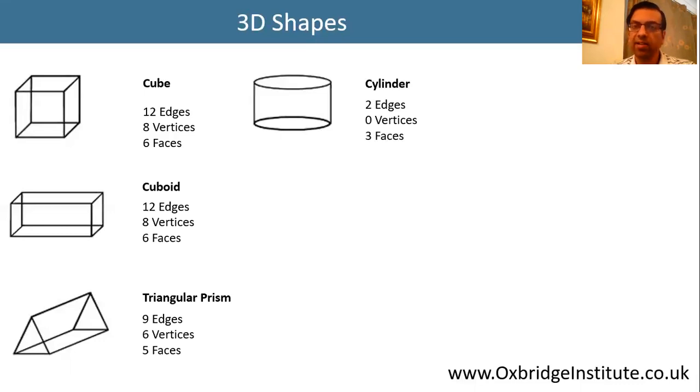A cylinder has 2 edges, no vertices, and 3 faces. And a sphere has 0 edges and 1 circular face.